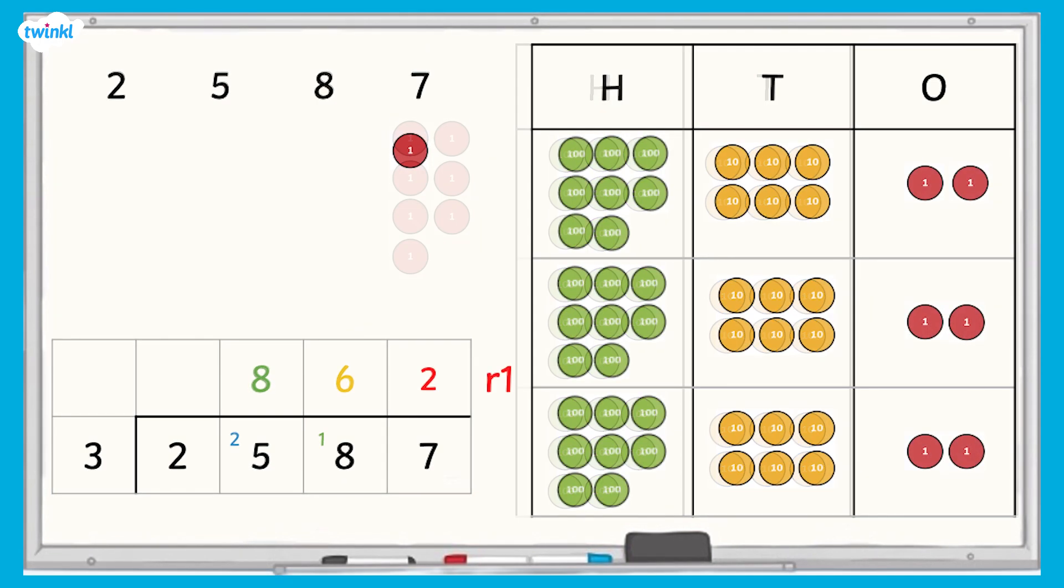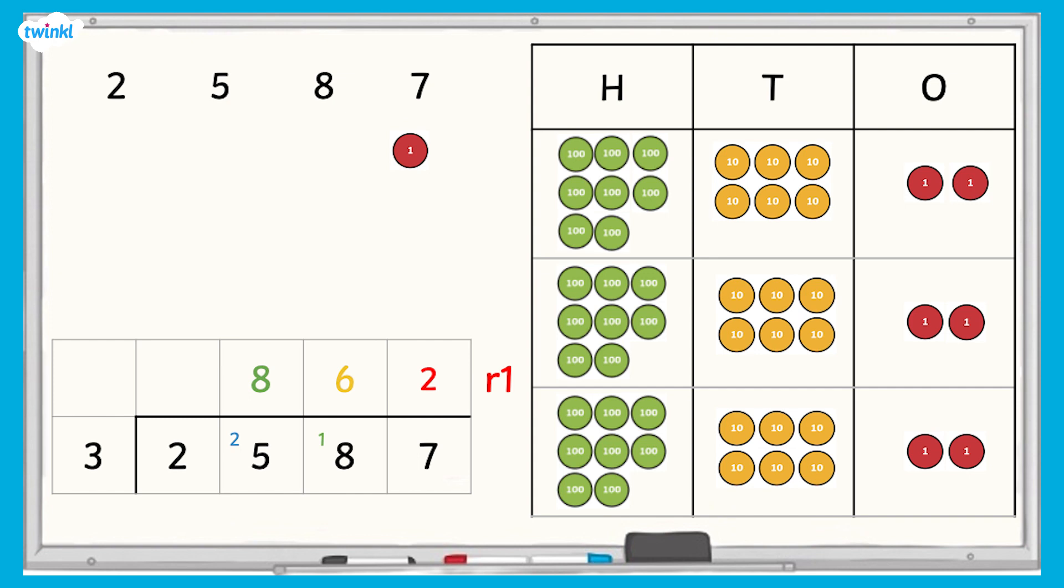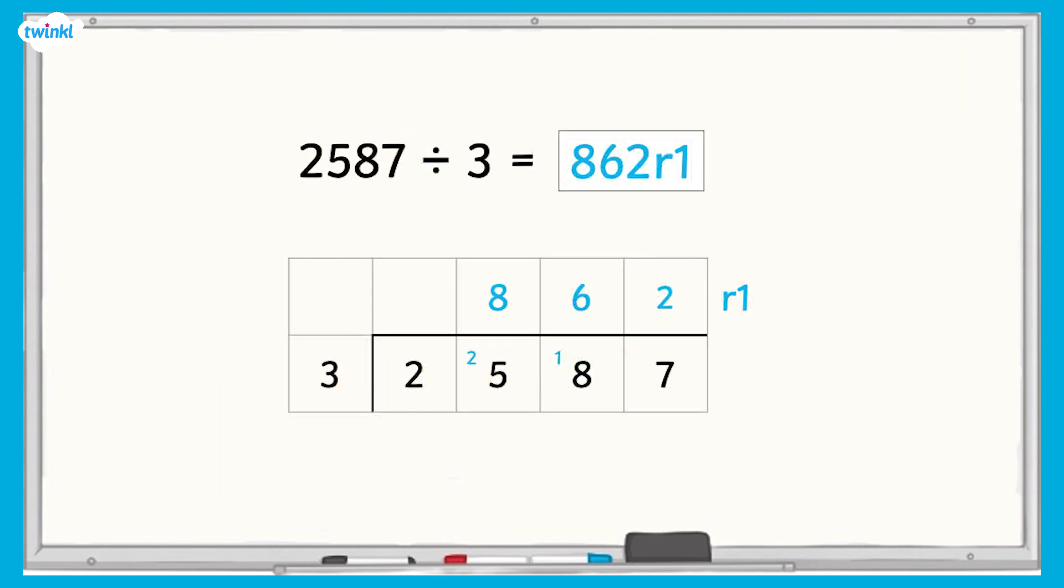Eighteen tens divided by three is six tens with one left over. Seven ones divided by three is two ones with one left over. We can't divide one one into three equal groups, so this is the remainder. Two thousand five hundred and eighty seven divided by three equals eight hundred and sixty-two remainder one.